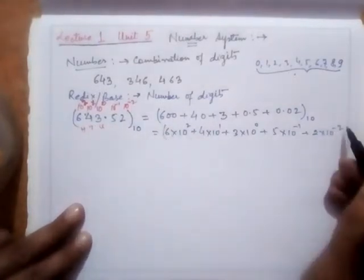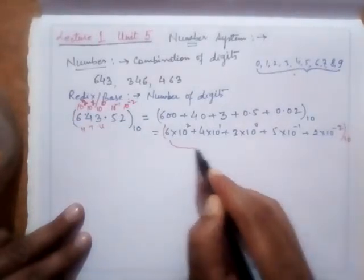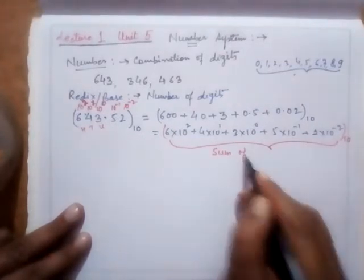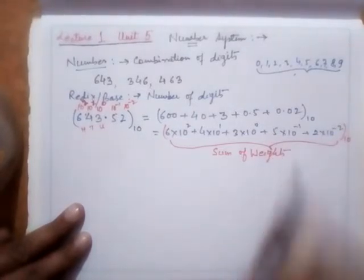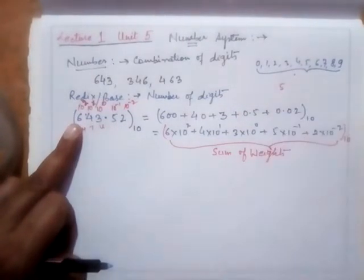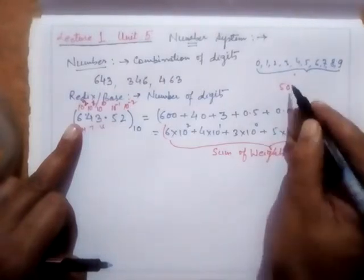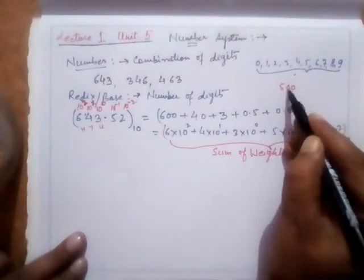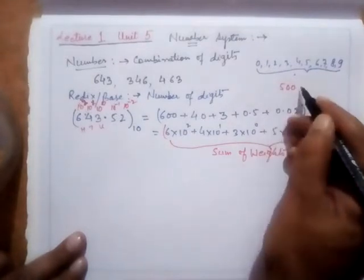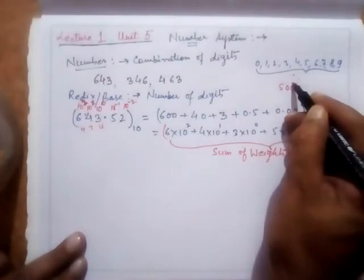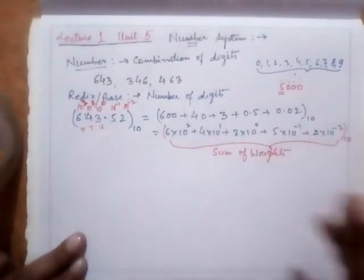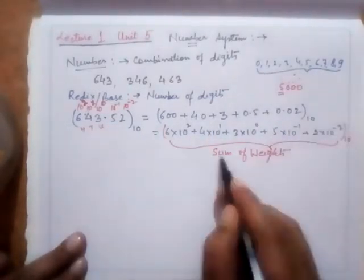So any number in base 10 can be represented as a sum of its weights. For example, if I say 5 rupees, then 50 rupees, then 500 rupees — with the help of zeros the weight of this 5 is changing. The weight goes from 10⁰ to 10¹ to 10² to 10³. So any number in this number system is represented as a sum of its weights.